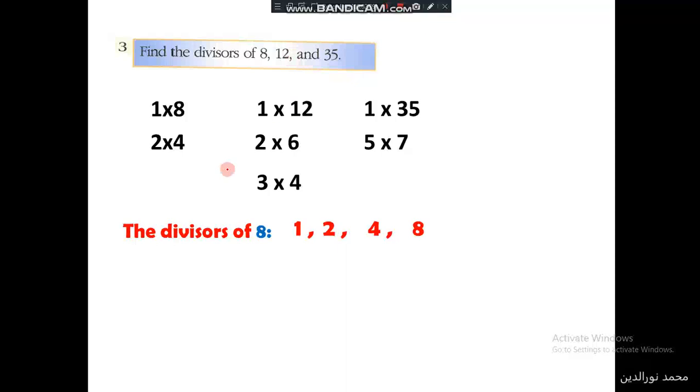The divisors of 12 are 1, 2, 3, 4, 6, 12. So it's 35 before: 1, 5, 7, and 35. And then the divisors of 12 are 1, 2, 3, 4, 6, and 12.